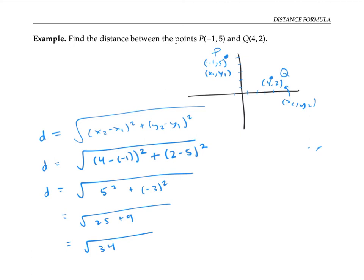Let's see what would have happened if we'd called this first point x2, y2 instead, and the second point x1, y1. Then we would have gotten the same distance formula, but we would have taken negative one minus four and added the difference of y squared, so that's five minus two squared. That gives us the square root of negative five squared plus three squared, which works out to the same thing.